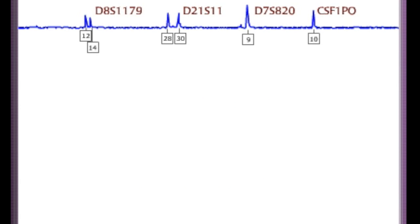Let's look at the blue channel for this person, which shows the result for 4 STRs. Each peak is an allele. Each locus occurs as a pair of peaks if heterozygous, or a single peak if homozygous.